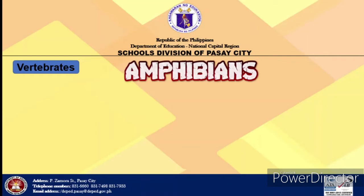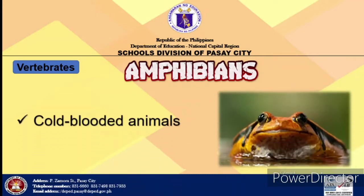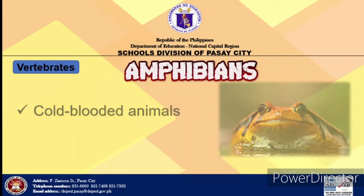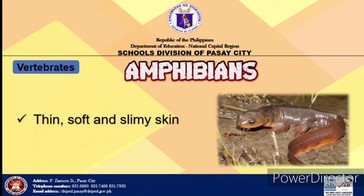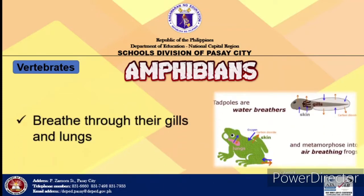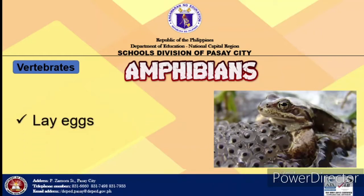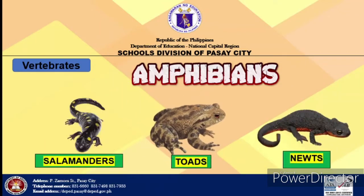Amphibian means double lives, which refers to the ability of the animals to live in both land and water. They are cold-blooded animals, which means their temperature depends on the temperature of their surroundings. Most amphibians have thin, soft, and slimy skin, which is also used for breathing. The moist surface of their skin enables them to absorb oxygen from the air. Baby amphibians use their gills in breathing while in water, while adult amphibians use their lungs for respiration. They undergo external fertilization, meaning they lay eggs. Examples are toads, salamanders, and newts.